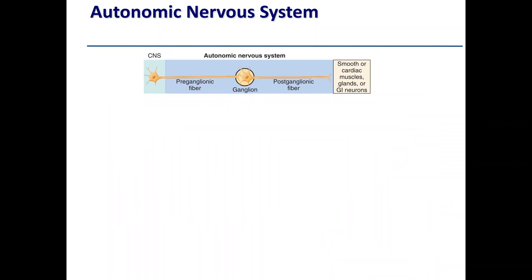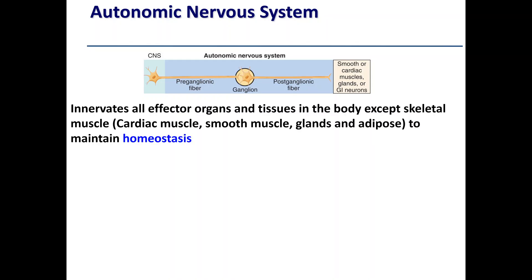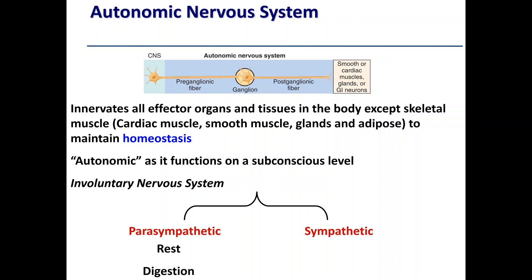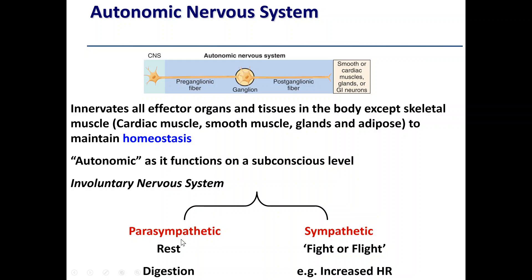The peripheral nervous system also divides into the autonomic nervous system, which is further divided into the sympathetic and parasympathetic nervous systems. The autonomic nervous system innervates all effector organs and tissues except skeletal muscle — things like cardiac muscle, smooth muscle, glands, and adipose tissue. Its main function is to maintain homeostasis. Because it operates on a subconscious level, it's often referred to as the involuntary nervous system.